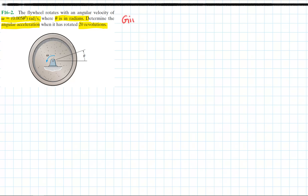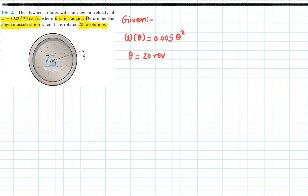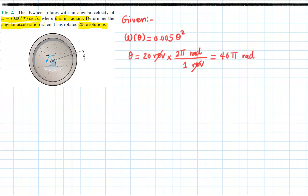Let's write down what is given. The angular velocity omega is given as a function of position: omega equals 0.005 theta squared. The angular displacement theta is 20 revolutions. Converting to radians: one revolution equals 2 pi radians, so 20 revolutions gives us 40 pi radians.